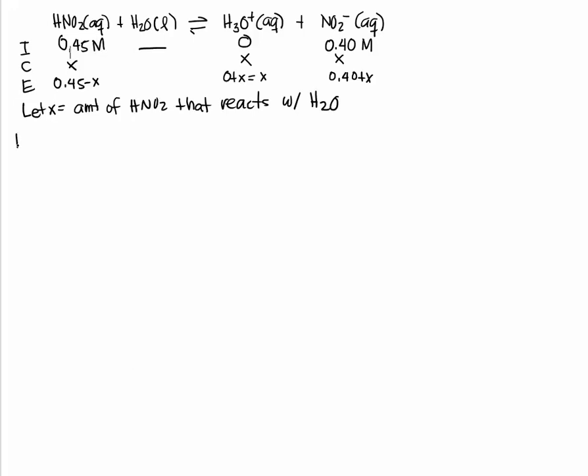We do Ka equals products over reactants. That would be concentration of H3O plus to the first, concentration of NO2 minus to the first, over the concentration of HNO2 to the first. And these are all equilibrium values.